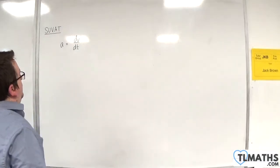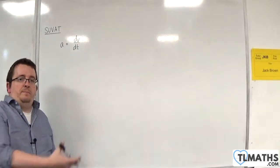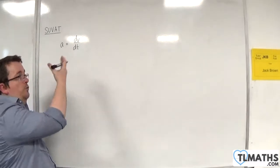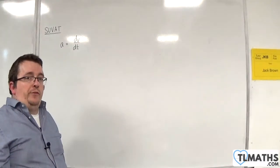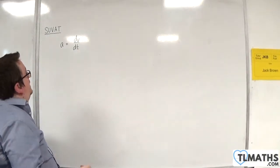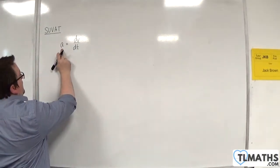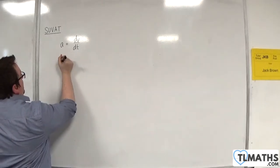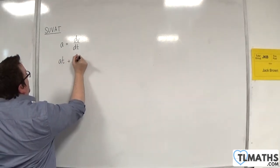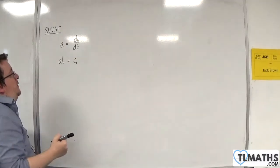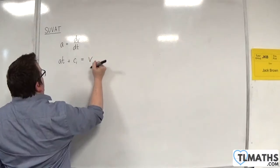So it's like saying dv/dt equals 2, or dv/dt equals 3. What I'm going to do is integrate both sides with respect to t. When I integrate the left-hand side with respect to t, I'm just going to get a times t plus some constant — let's call it c1. And on the right-hand side, this will integrate to v.